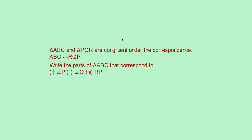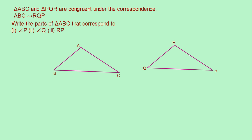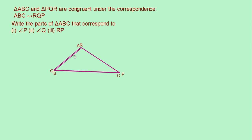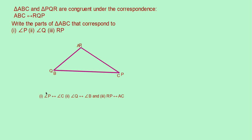Here is a question for you. Triangle ABC and triangle PQR are congruent under the correspondence ABC to RQP. Write the parts of triangle ABC that correspond to angle P, angle Q, and side RP. By drawing the figure of triangles ABC and RQP, if we place RQP on ABC, the corresponding angle of Q is angle B, and the corresponding side of RP is AC. So the matching is: angle P corresponds to angle C, angle Q corresponds to angle B, and RP corresponds to AC.